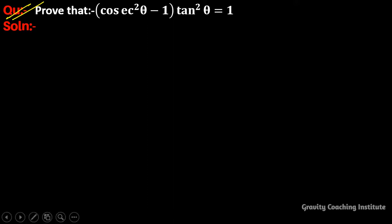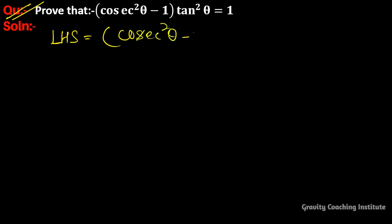Question: prove that cosec square theta minus 1 into tan square theta equals 1. So here LHS is equal to cosec square theta minus 1 into tan square theta, and we know that the formula of cosec square theta minus 1 is equal to cot square theta.